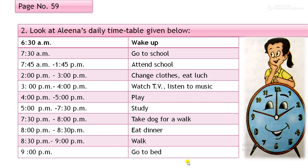The next exercise is about a daily routine — it's Alina's daily routine or timetable. Let's look at her timetable. At half past 6, she gets up. At half past 7, she goes to school. From quarter to 8 to quarter to 2, she attends school. From 2 to 3 p.m., she changes her clothes and takes lunch. From 3 to 4 p.m., she watches TV.